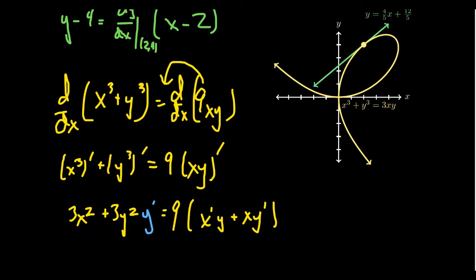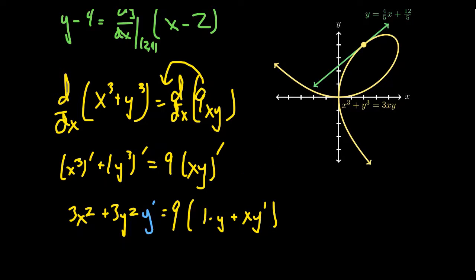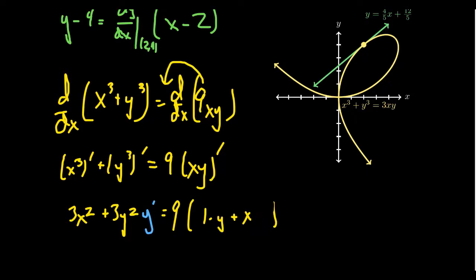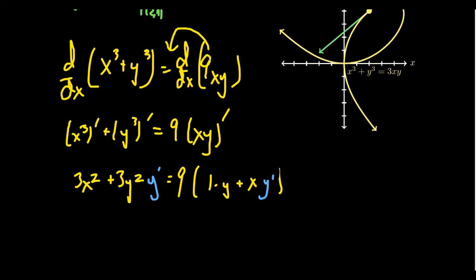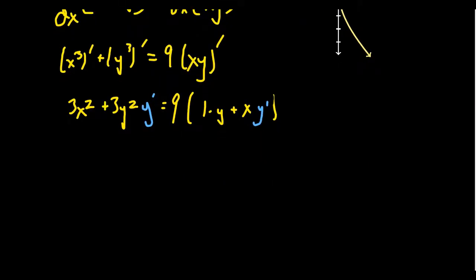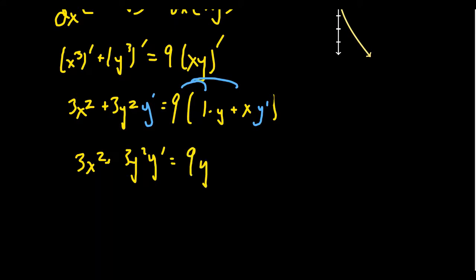We can simplify: x prime is just 1. So we have 3x squared plus 3y squared·y′ on the left, equal to 9 times (y + x·y′) on the right. We want to solve for y prime — that's what we're looking for. Distributing the 9 through gives: 3x squared plus 3y squared·y′ equals 9y plus 9x·y′.